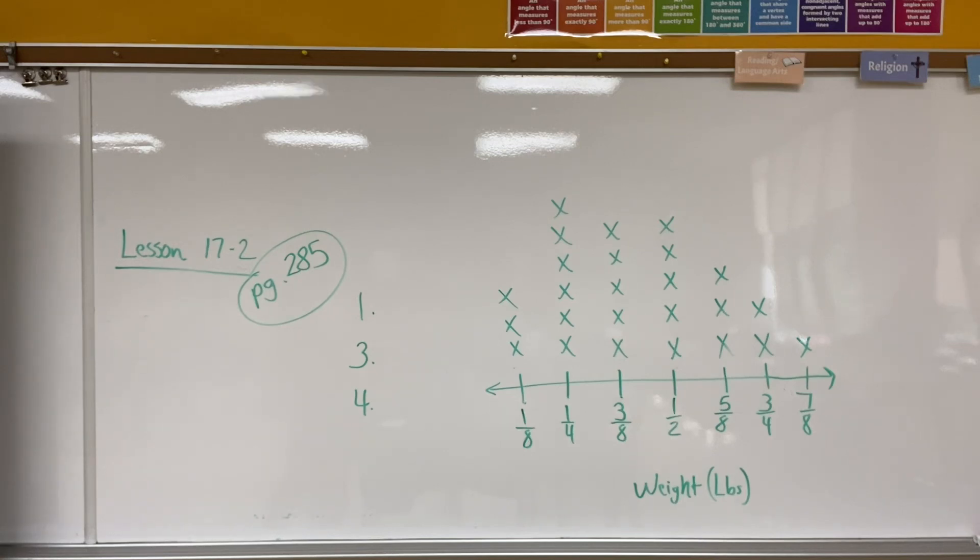For number three, it says how many apples did the family pick all together? And for number four, it says what is the total weight of all the apples? Again, in order to add all the weights together, you need to make them all have the common denominator and then you can add up all the weights. If you have any questions on line plots with fractions and mixed numbers, please let me know when you come to class tomorrow.